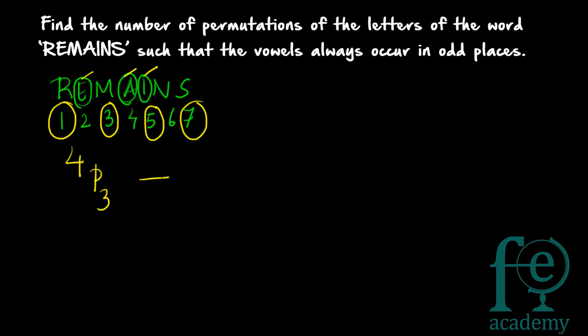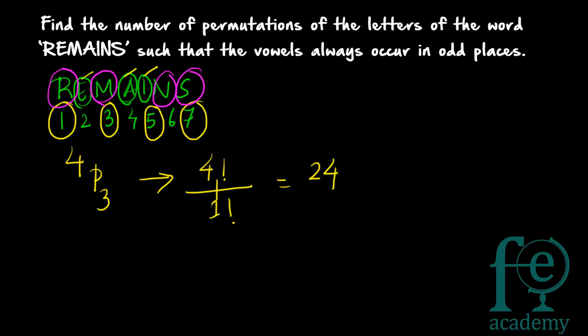4P3 uses the formula nPr = n! / (n − r)!. So 4P3 = 4! / (4 − 3)! = 4! / 1! = 24. Now, the remaining letters are the consonants. There are four consonants, and four different consonants can be arranged in 4! = 4 × 3 × 2 = 24 ways.